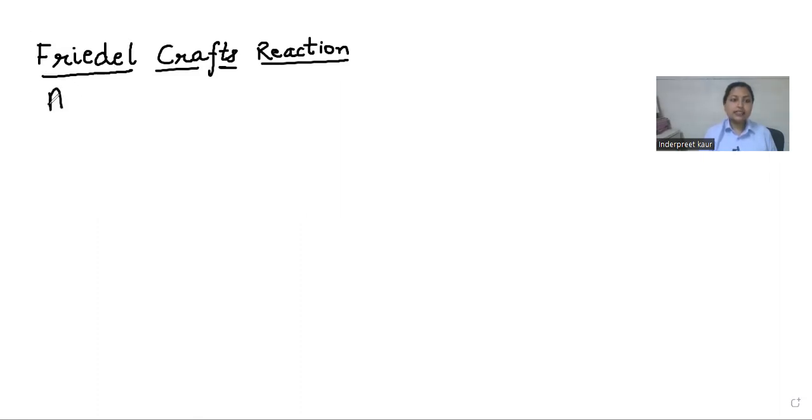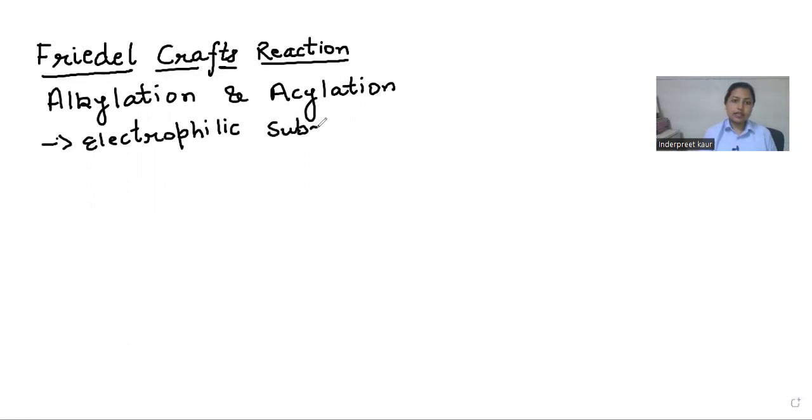First one is alkylation and second one is acylation. So it is a set of two reactions, alkylation and acylation. And it is a type of electrophilic substitution reaction.